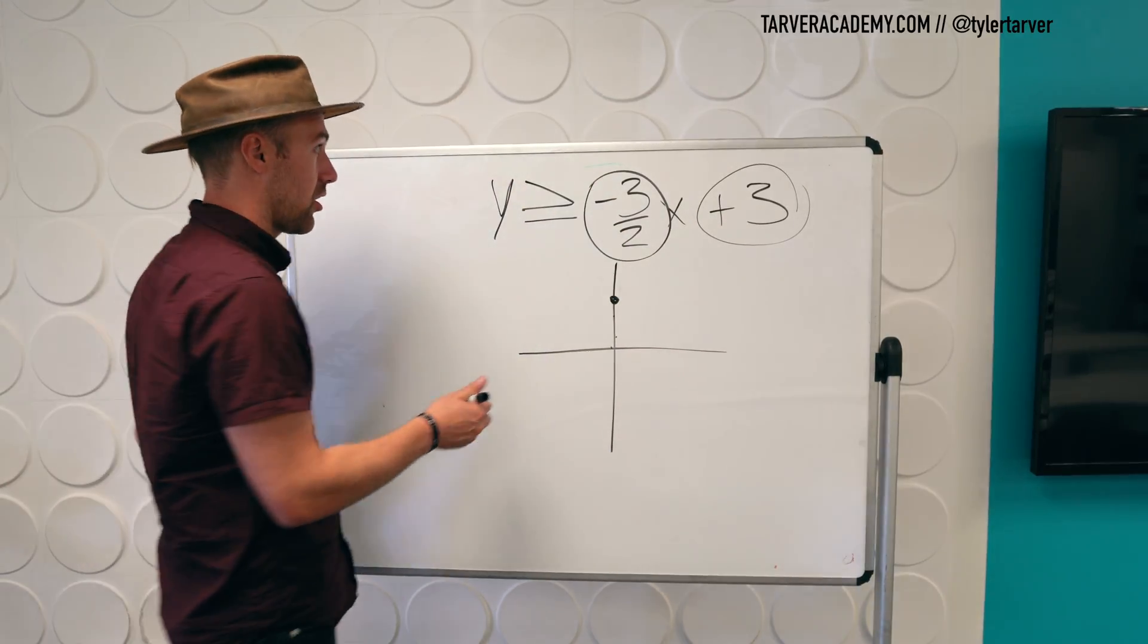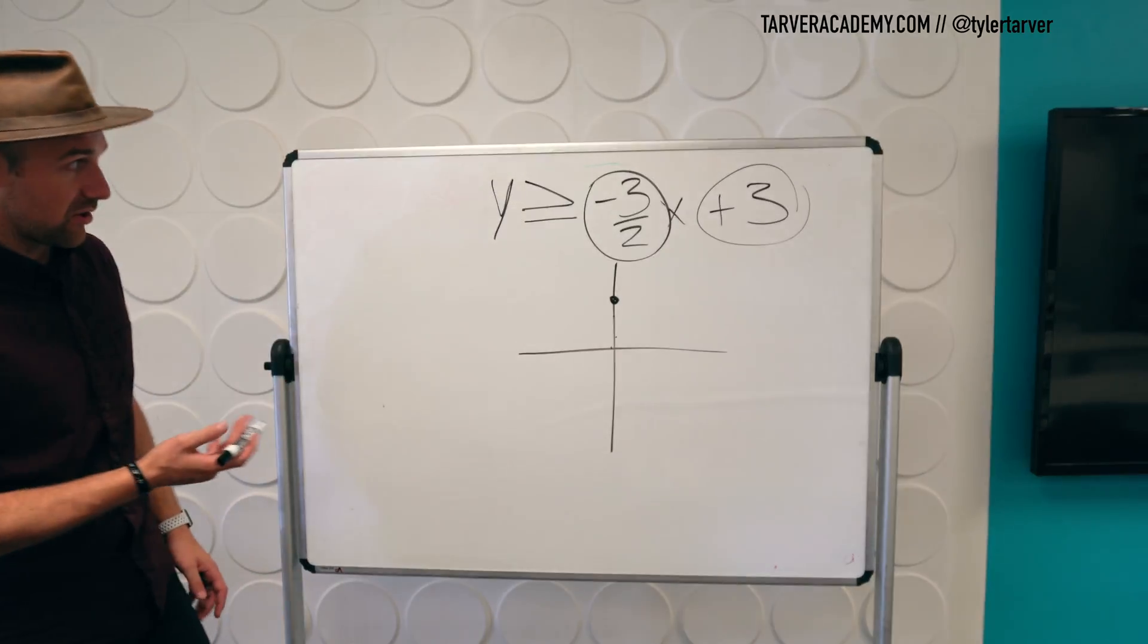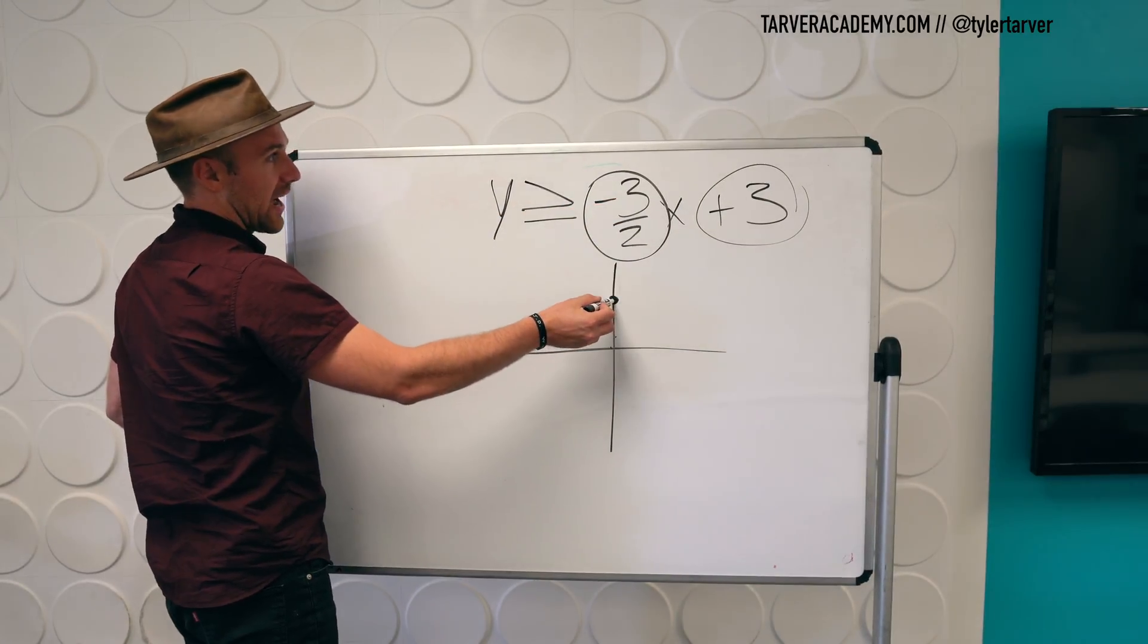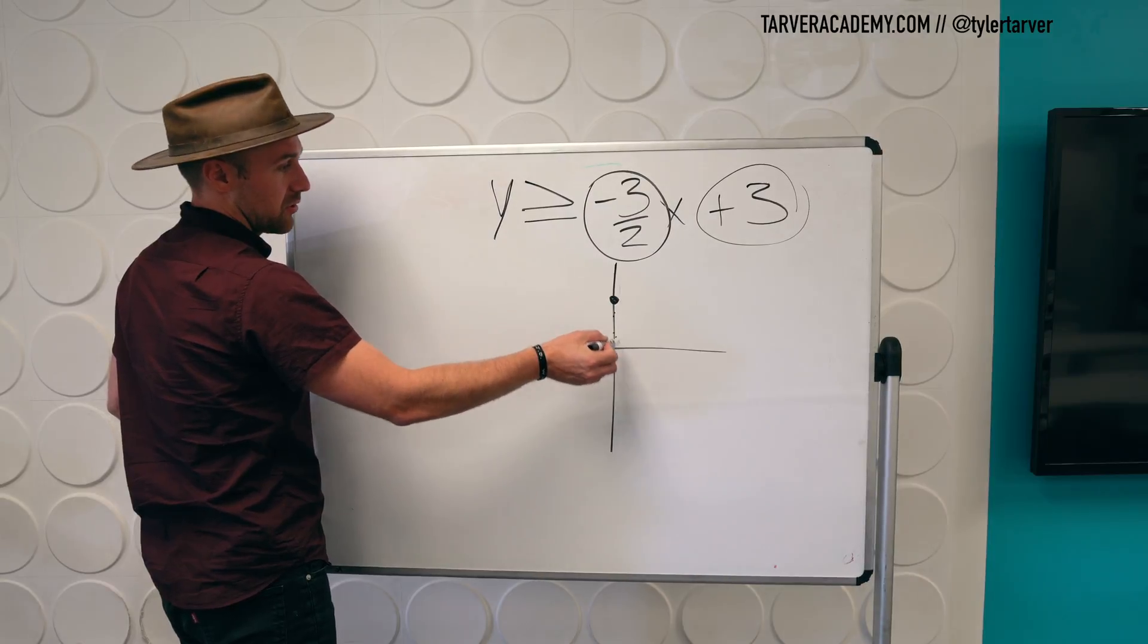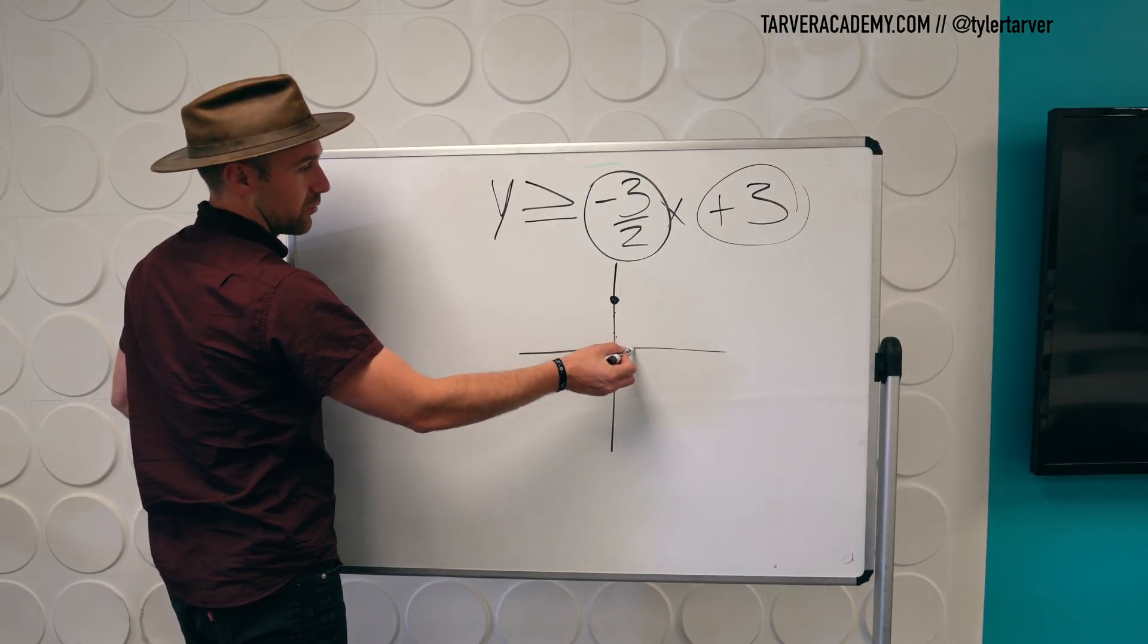So just go listen to your heart. We'll leave it with the three because that's what it's already hanging out with. So it's rise over run. So we're going to rise negative three. One, two, three, run two, one, two.